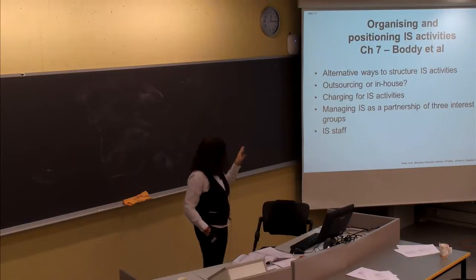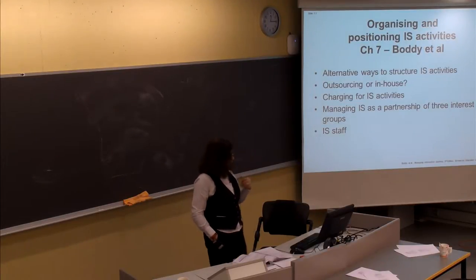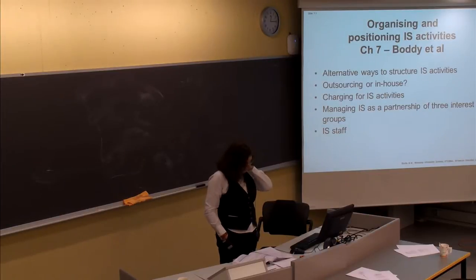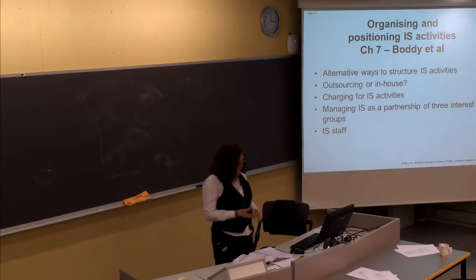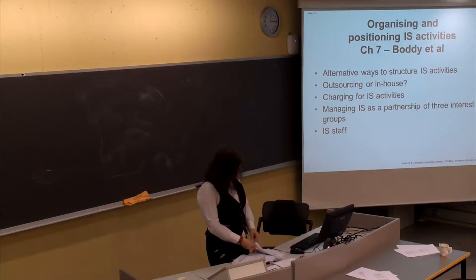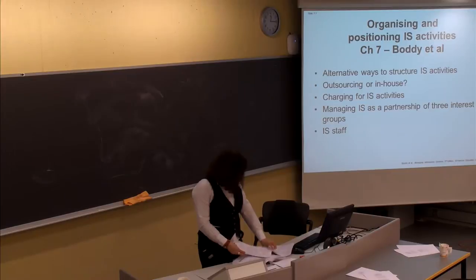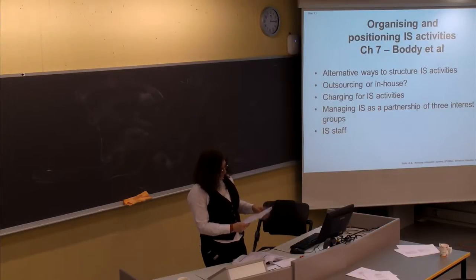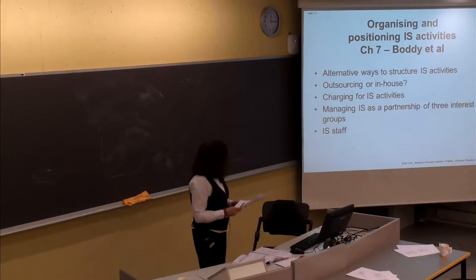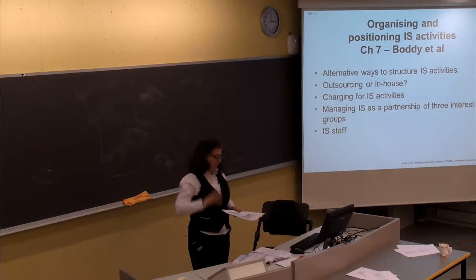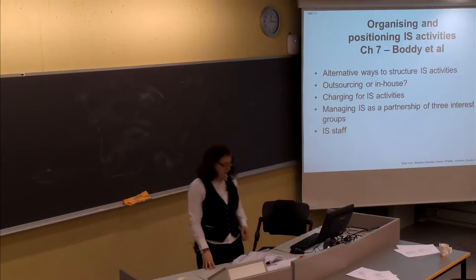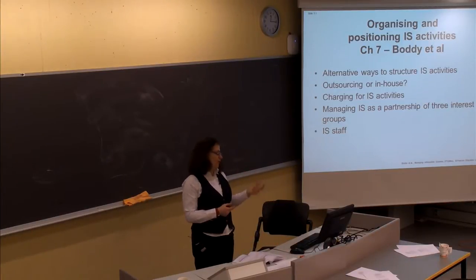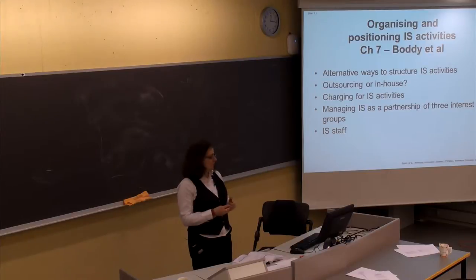Today we'll be talking about Chapter 7, which is about where you place highest activities in the organization. In addition, I'm going to go through a couple of examples. There's one in the extra materials about Owen Minor as a case example, and another one I found in my notes about Norges Gruppen. Because it's not my material, I can only record the first half of the lecture, and then the second half you'll have to access the materials yourself.